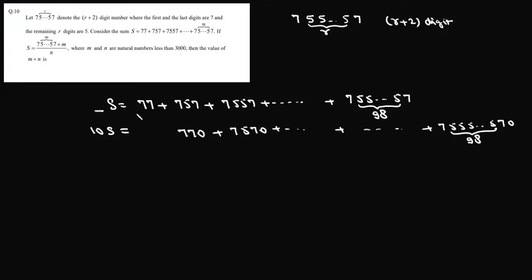So if we subtract 1st from 2nd, now 10s minus s is basically 9s. Now this is minus 77. Now 770 minus 757, essentially this is 70 minus 57 so it will be 13.